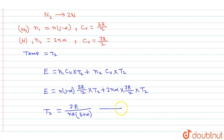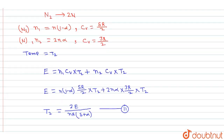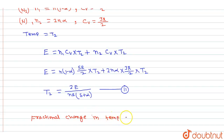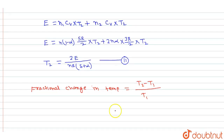Now we find the fractional change in temperature. The fractional change is (T2 - T1)/T1. Substituting: T2 = 2EN / [NR(5 + α)] and T1 = 2EN / (5NR).